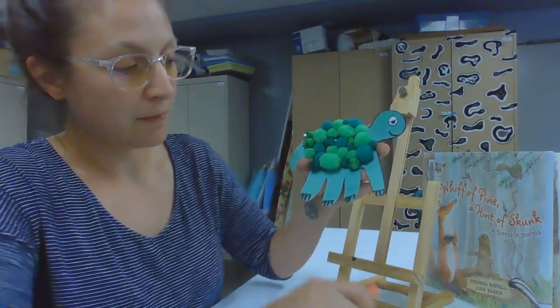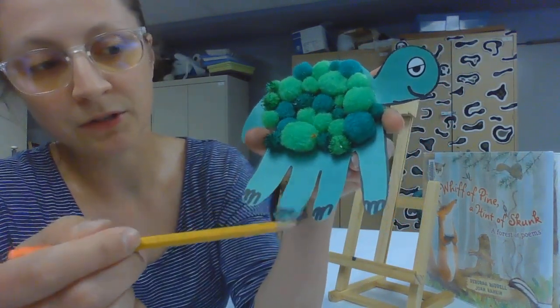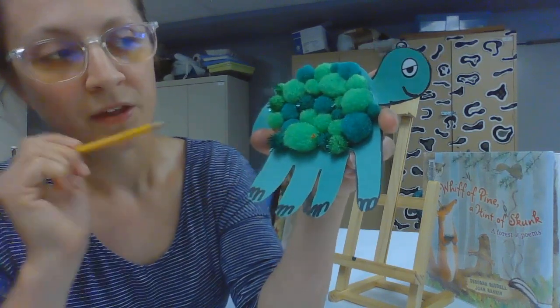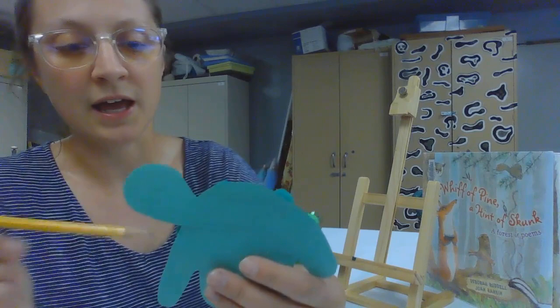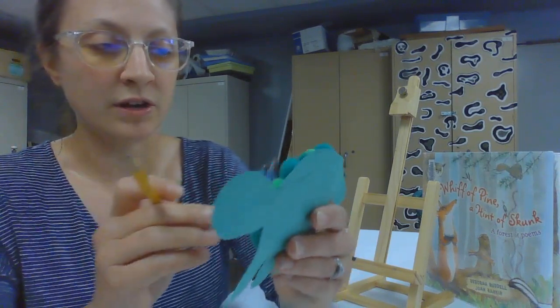And then using a marker, you can give him his little toes here. So I drew some little toes, just look like some big M's, and then I glued on his head. That was a little extra piece that I made out of the green paper.